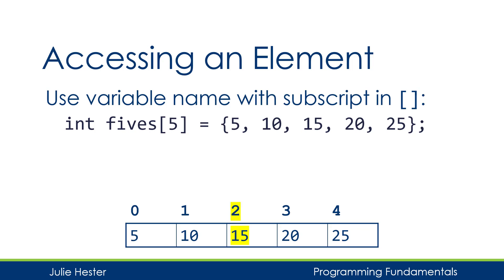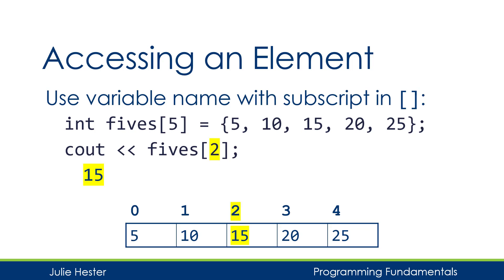Now if I want to view the value of a particular element, I can simply use cout with the name of my variable — fives — and then indicate the subscript number of the element I want to see. Here I am displaying the third element, so I'm using subscript 2. When this code executes, I will see 15 on my console window.